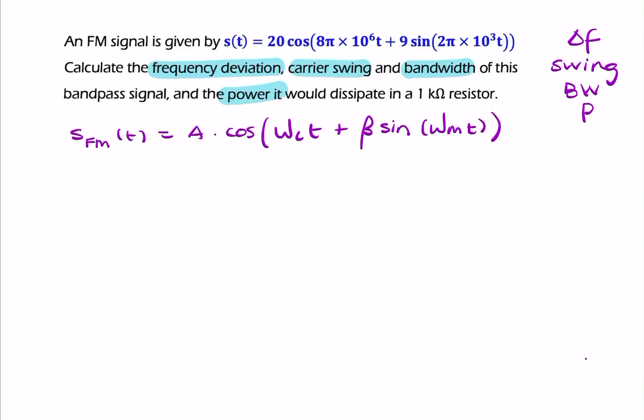By simply comparing these two expressions, you see that we can extract beta. We can say beta equals 9, and we can also find the message frequency. So f_m is simply 1 kilohertz, so it's that divided by 2π.